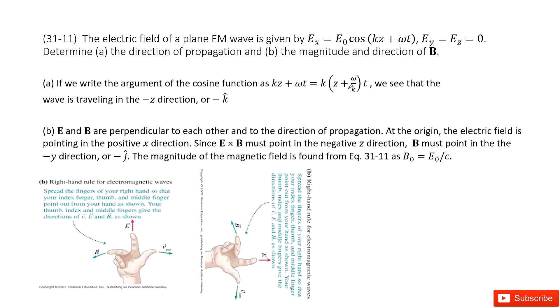Chapter 31 is about Maxwell equations and electromagnetic waves. We have an EM wave here.